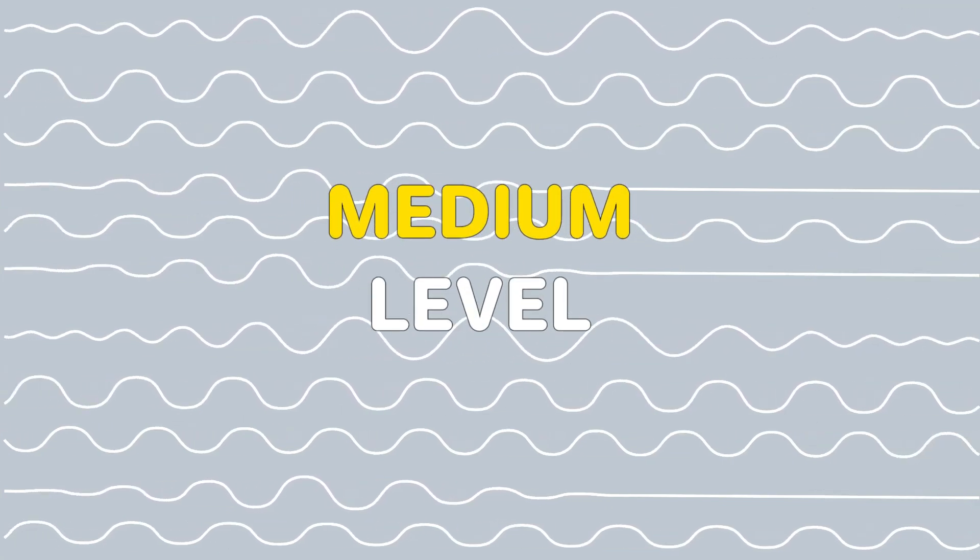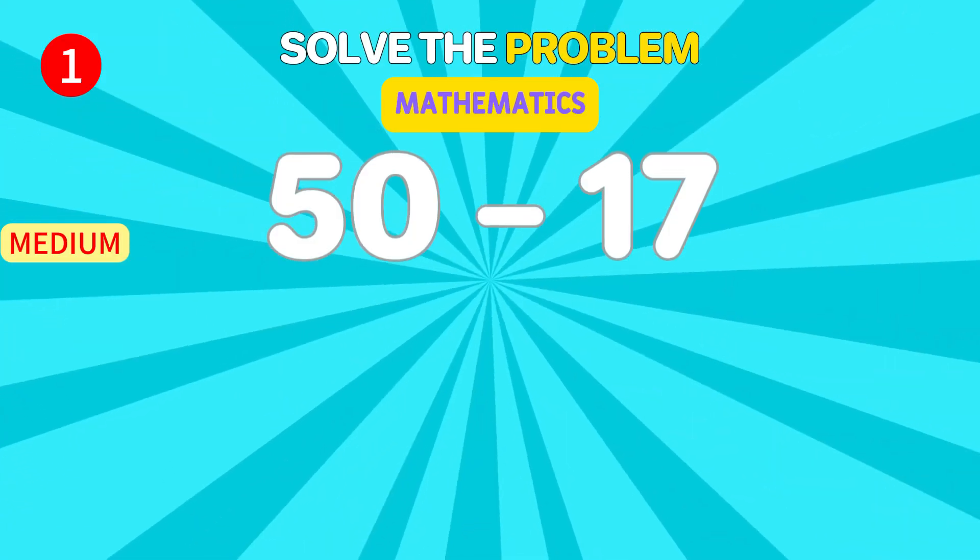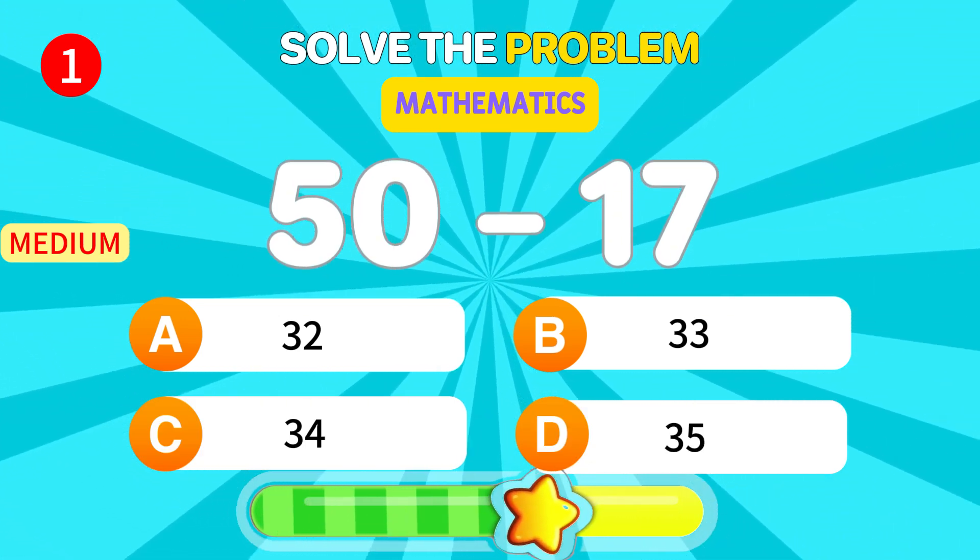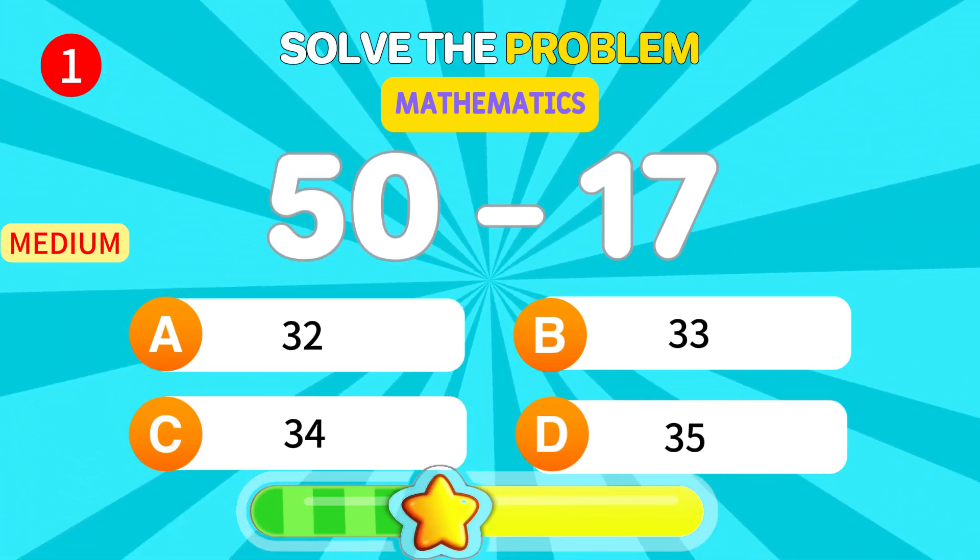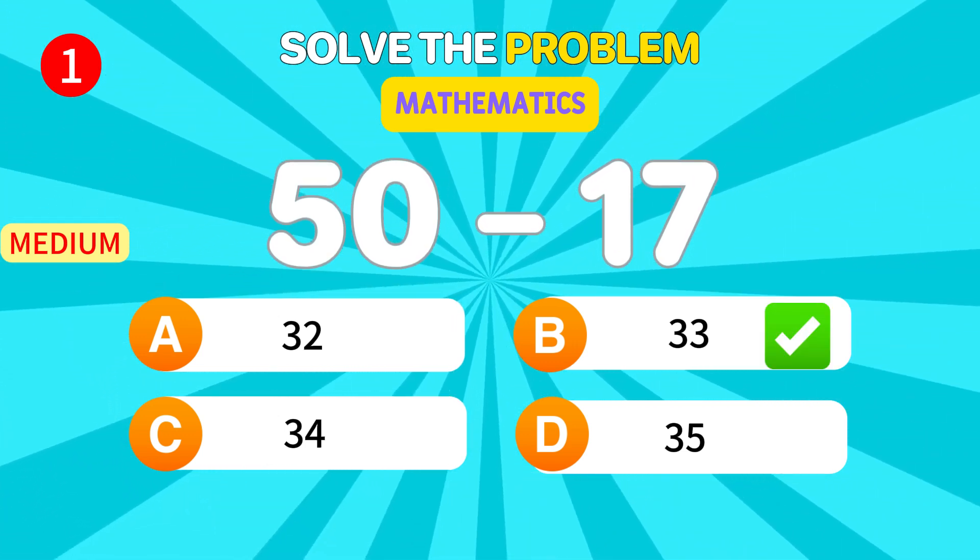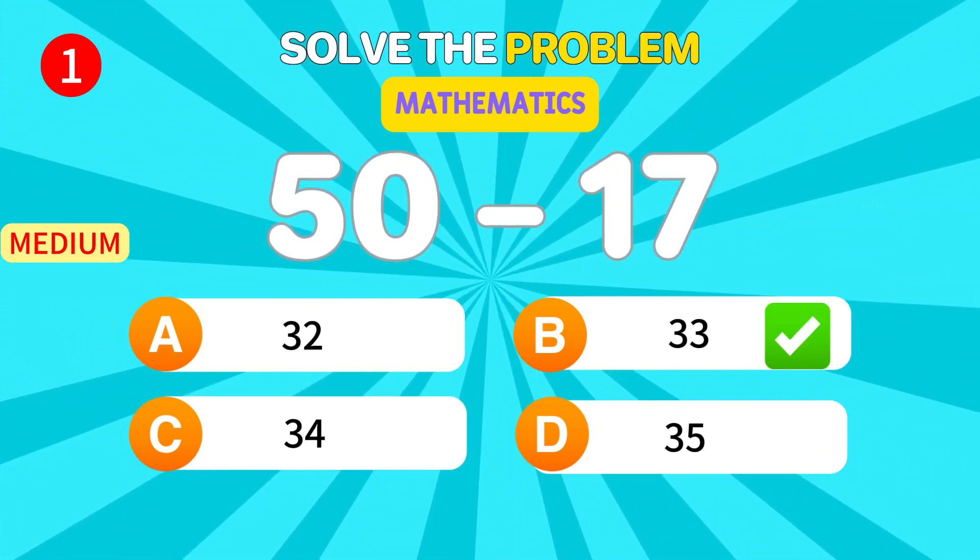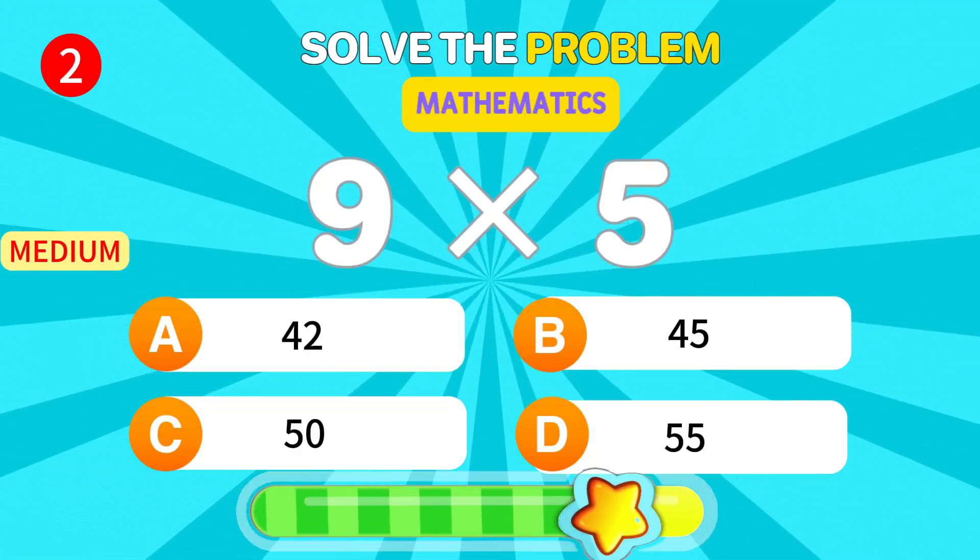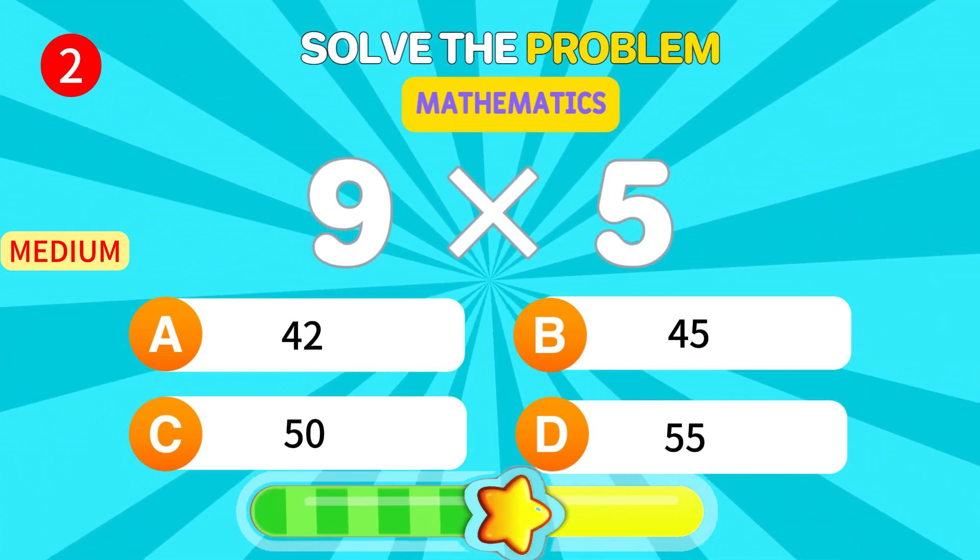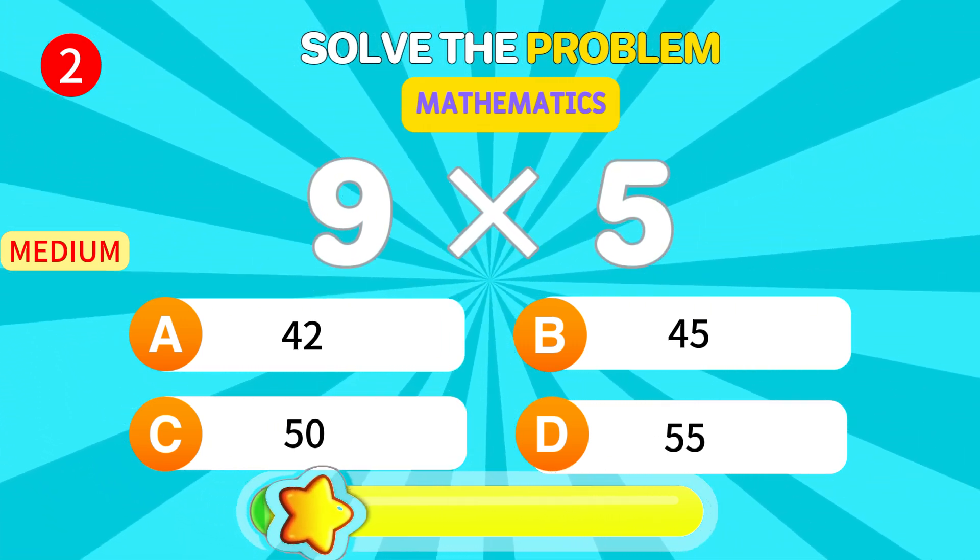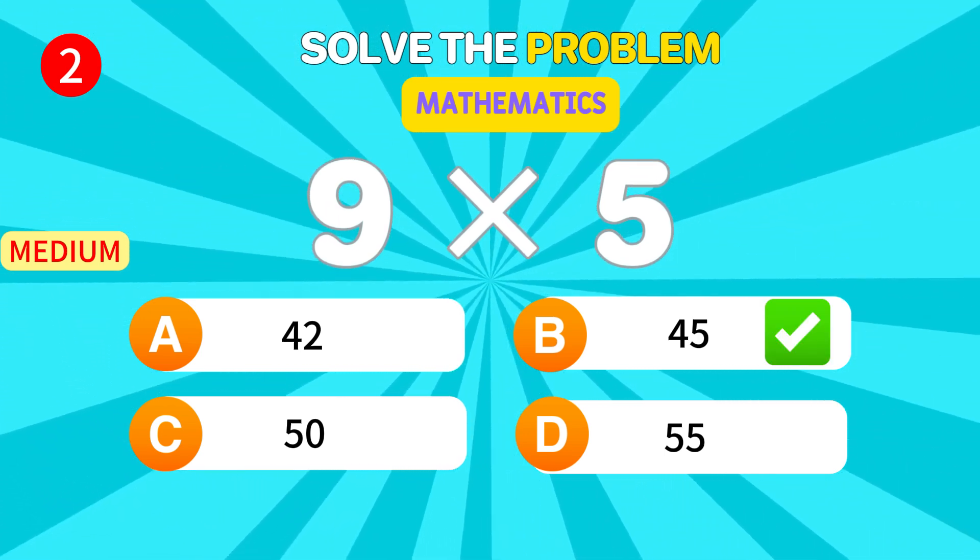Now buckle up for the next level. What is 50 minus 17? 33. Awesome. Solve this equation. 9 times 5. 45. Spot on.